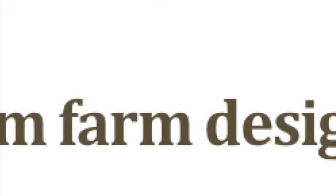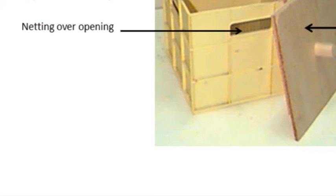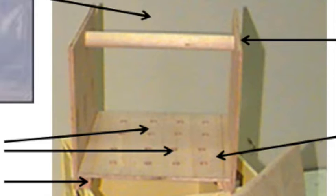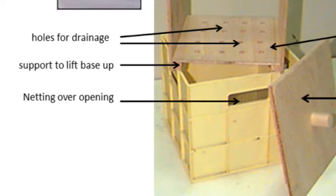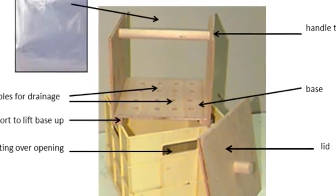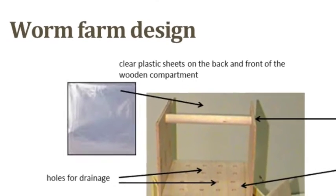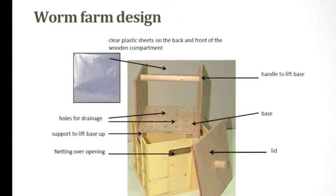They could drown in it. And they need to think about ventilation because a worm farm designed by year six and seven students during woodwork classes. The container is a plastic cube with openings as handles on the four sides of the cube, which also serve as air vents. The openings are covered by netting to stop the worms from escaping. The students built a wooden compartment that can be lifted out of the plastic container for cleaning as well as to drain excess liquid. The base of the wooden compartment has holes and is lifted off the base of the container by wooden supports for drainage purposes, as worms do not like soil that is too waterlogged. The students have placed clear plastic sheets on the back and front side of the wooden compartment that will allow them to see the activity of the worms inside the worm farm as they lift the whole compartment up.